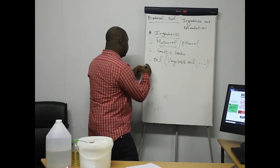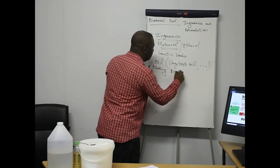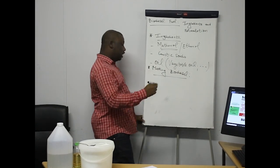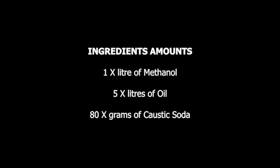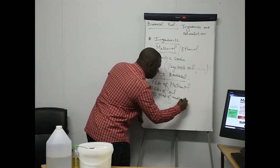I'm going to give you some proportions on the amount of ingredients for making biodiesel. You can consider having one liter of methanol, five liters of oil, and 80 grams of caustic soda. By doing this you produce about six liters of biodiesel fuel.